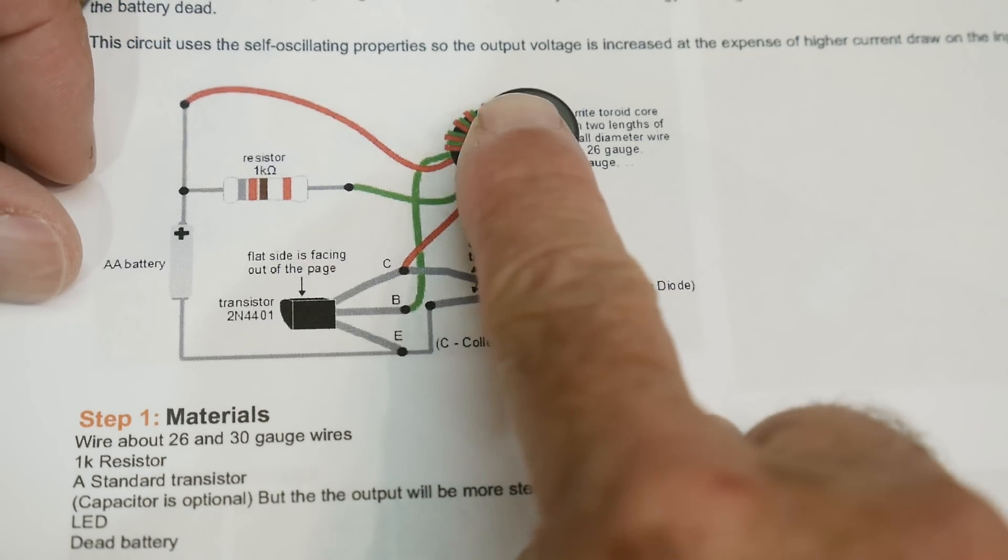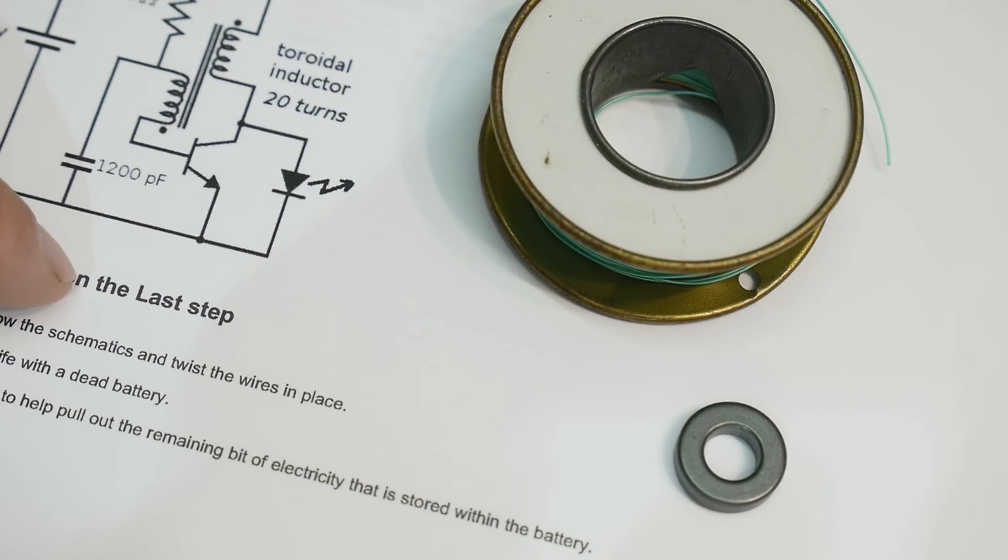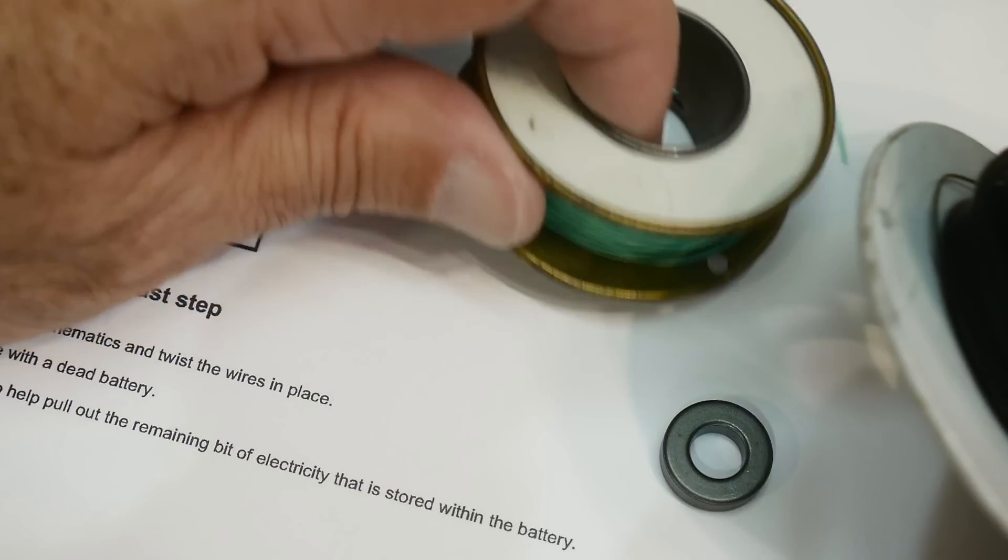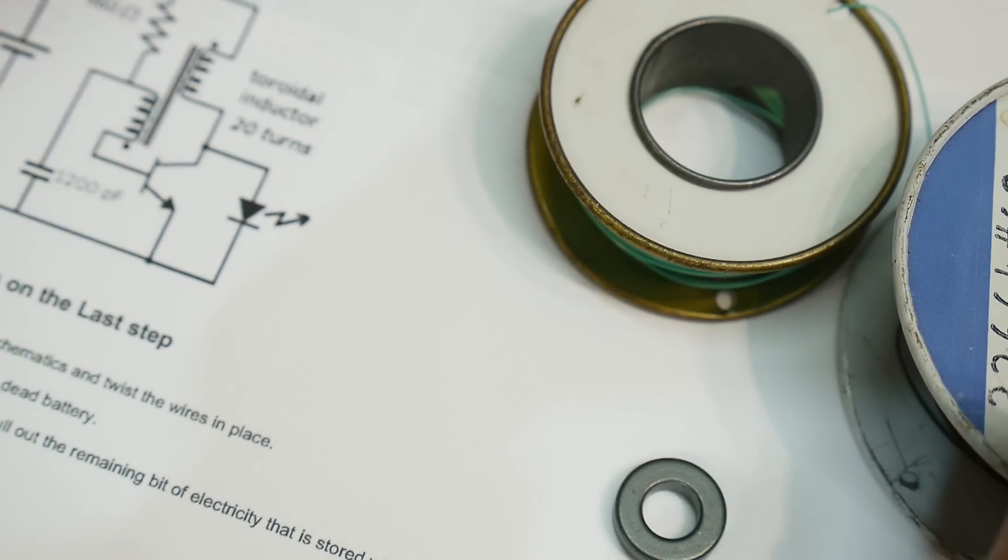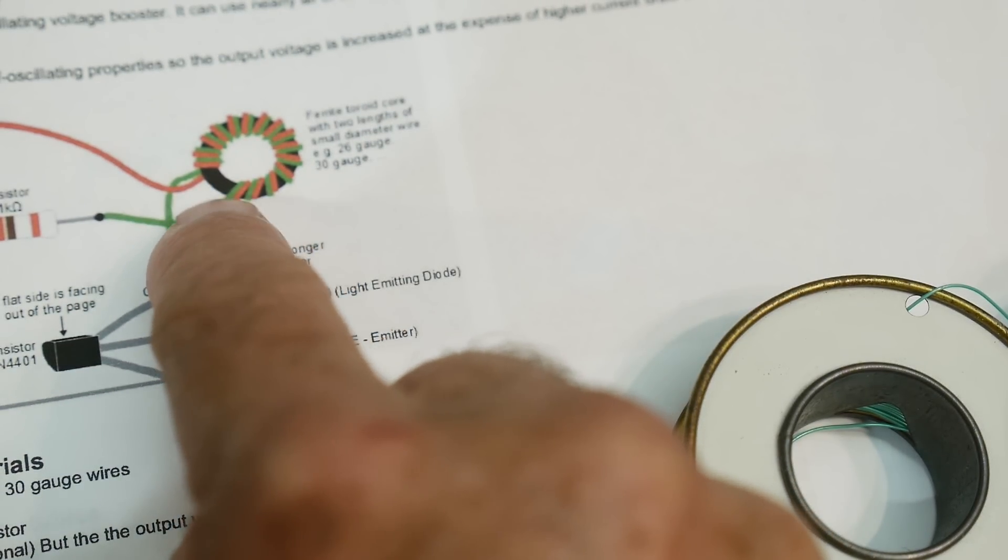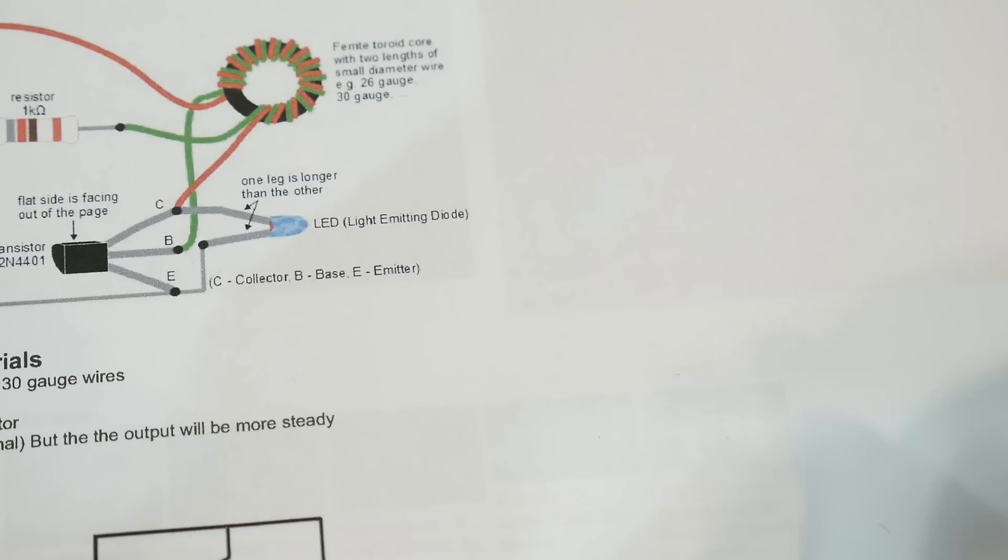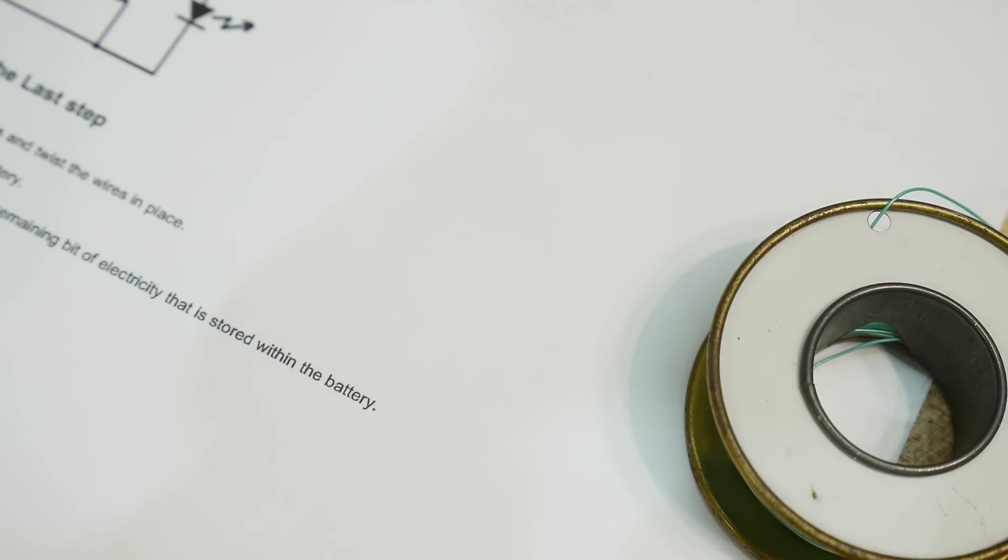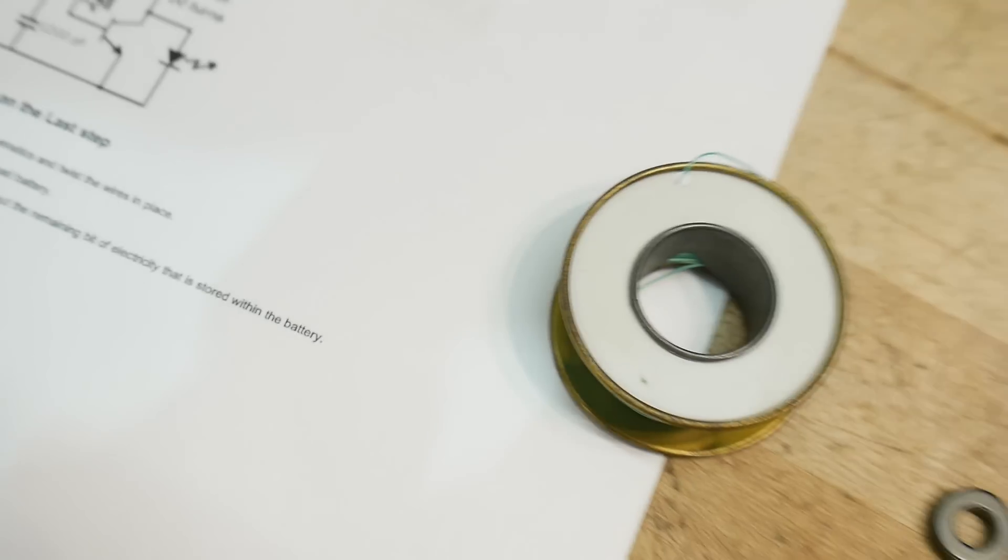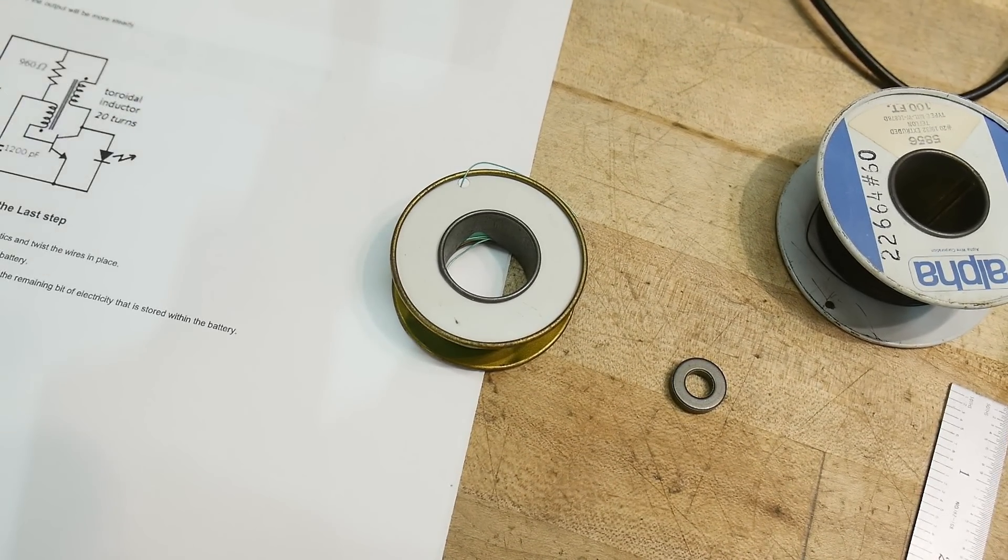We're going to be using some number 30 wire. I'm going to use a green one and a black one so I can keep them separate. They're wound together. And I calculated I need about 20 inches or so. Let's measure that out and hope we will get it wound up.